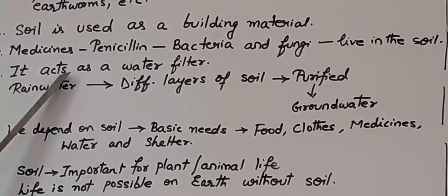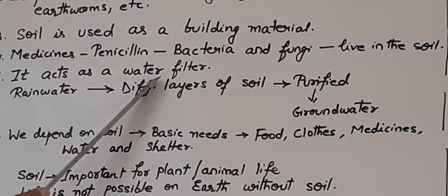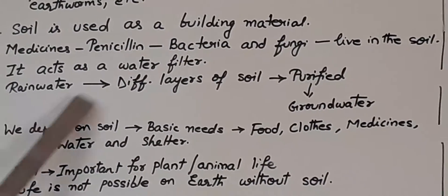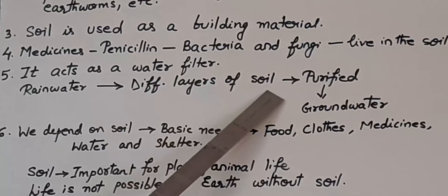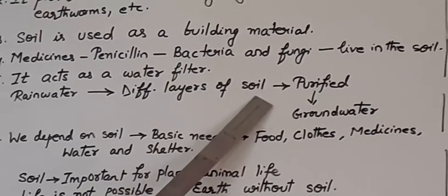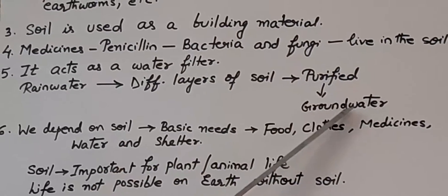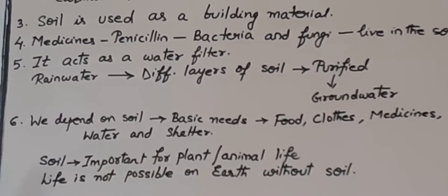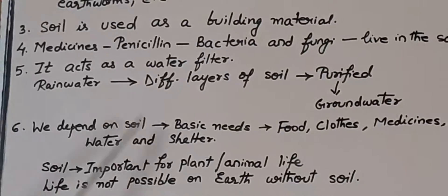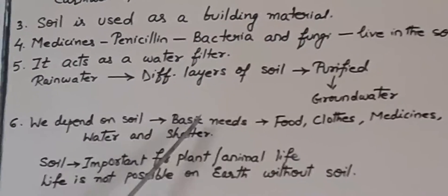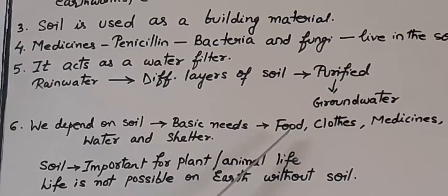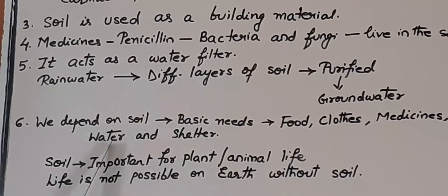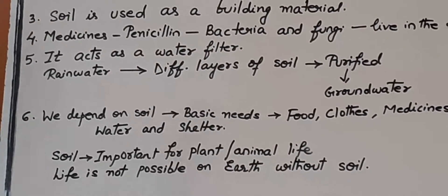Soil also acts as a water filter. When rainwater passes through the different layers of soil, it gets purified and stored as groundwater. We depend on soil for many of our basic needs like food, clothes, medicines, water, and shelter.